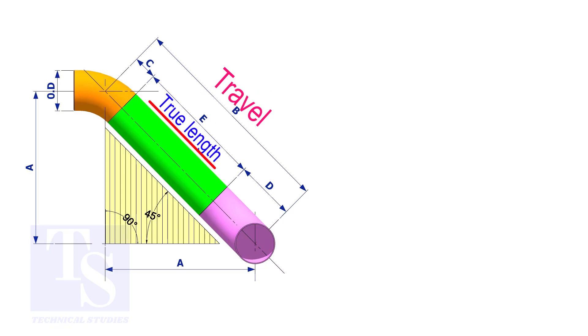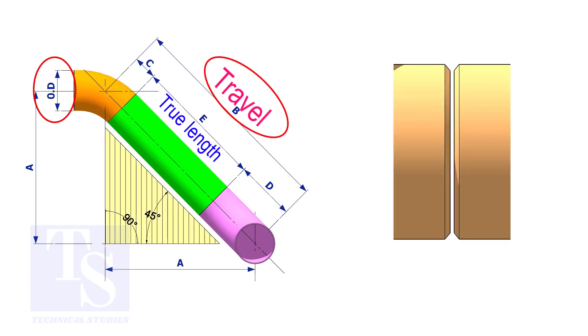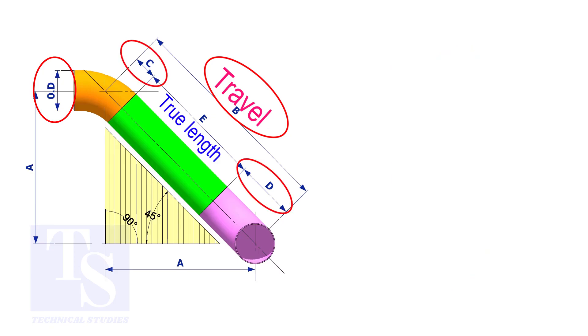To calculate the true length or the cut length, we need to know the travel length, the diameter of the pipe, the joint gap and the elbow center. The elbow center is sometimes called takeoff length.